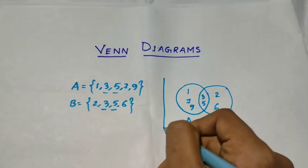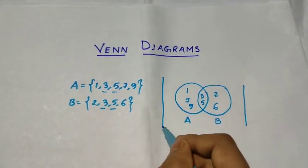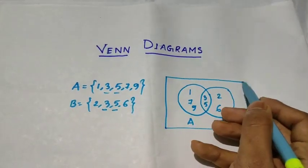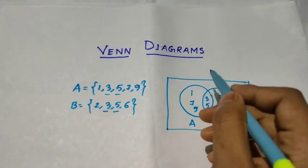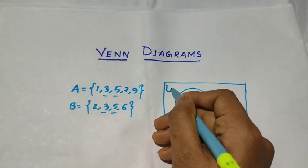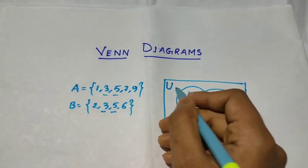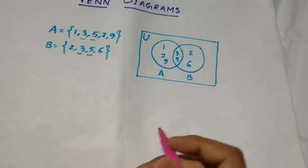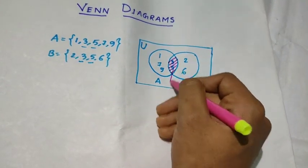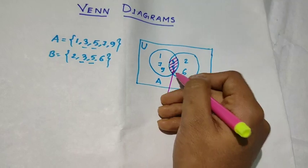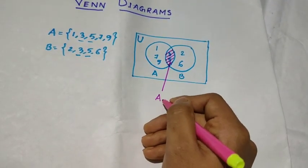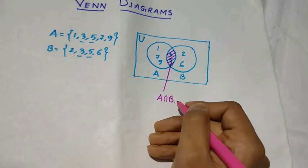And if we represent it in a rectangular box, then it is called a Venn diagram. This rectangular box indicates the universal set and it stands for U. Now, this overlapping region is the intersection of both the sets — that is A intersection B.